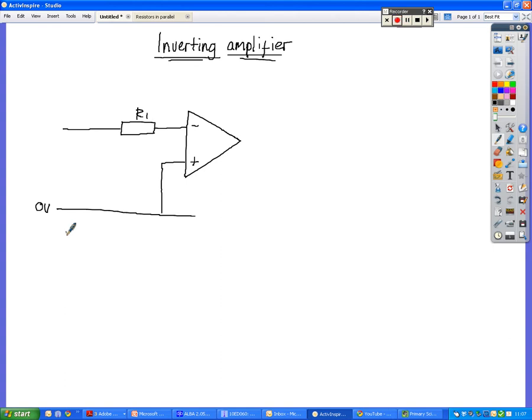If it did have a resistor connected to it, then we would call that a non-inverting amplifier, because it's connected to the positive terminal or the non-inverting terminal. But it's not in this case, and you don't need to know about that for higher physics. All you need to know is to be able to identify the inverting amplifier from a diagram.